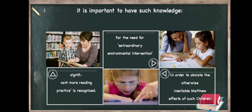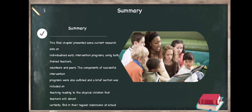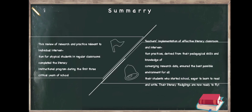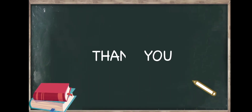For the summary, this final chapter presented some current research data on individualized early intervention programs using trained teachers, volunteers, and peers. Components of successful intervention programs were outlined, and a brief section was included on teaching reading to atypical children that teachers will almost certainly find in their regular classrooms. This review of research and practice relevant to individual intervention for atypical students completed the literacy instructional program during the first three critical years of school. Teachers' implementation of effective literacy classroom and intervention practices ensures the best possible environment for all their students — their literacy fledglings are now ready to fly. That's all for my report. Thank you so much for listening. I am Janeline Manlunas, and God bless us all.